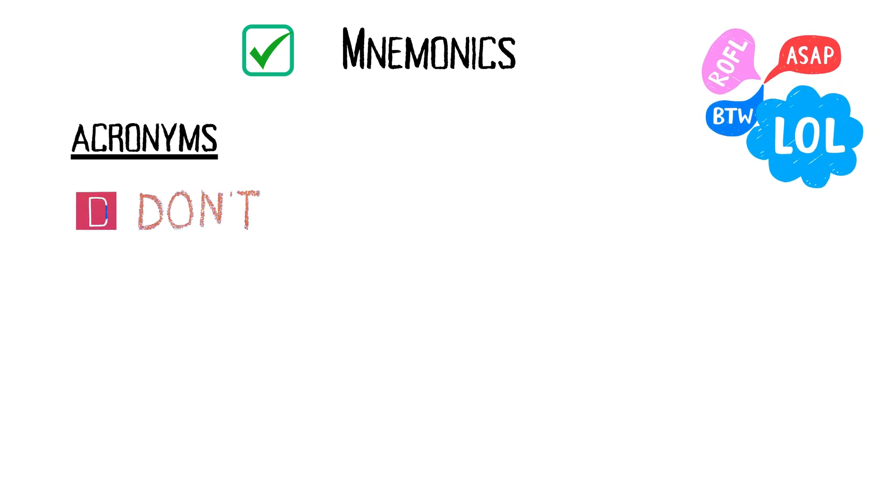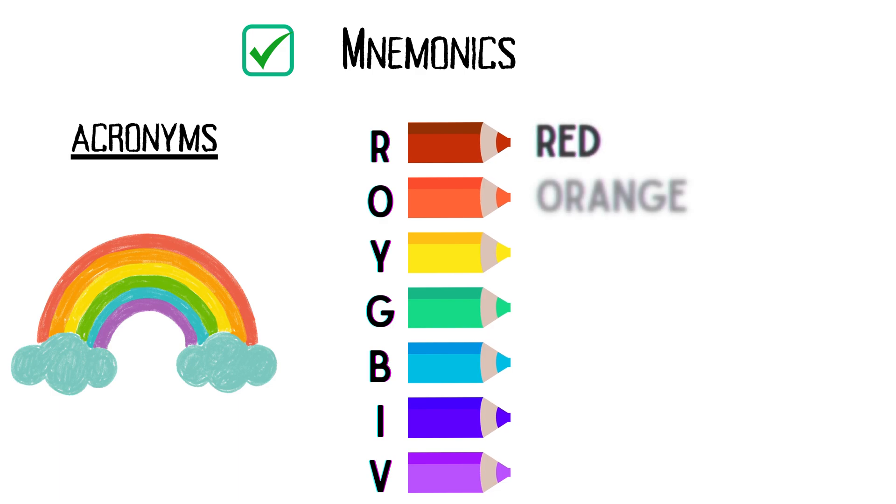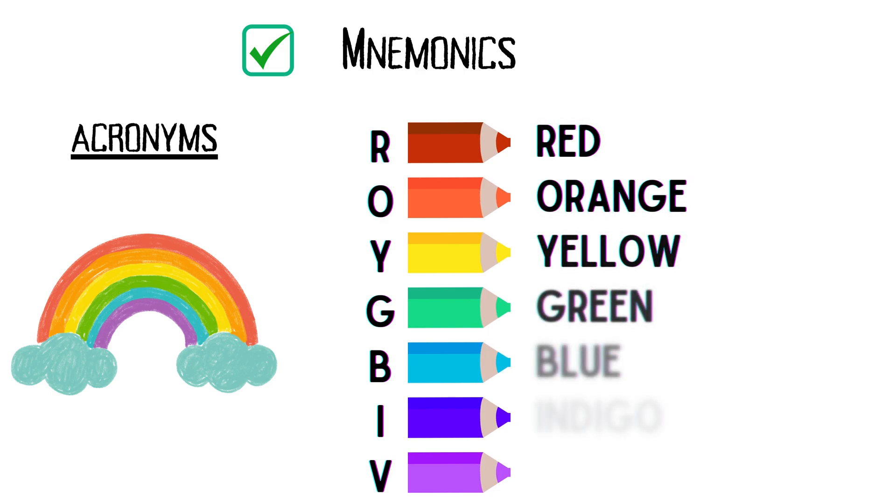Acronyms are created by taking the first letter of each word in a list and forming a new word or phrase. For example, to remember the colors of the rainbow, use the acronym ROYGBIV: red, orange, yellow, green, blue, indigo, violet.